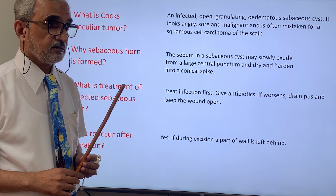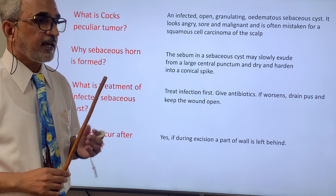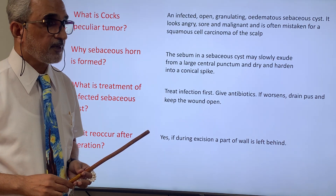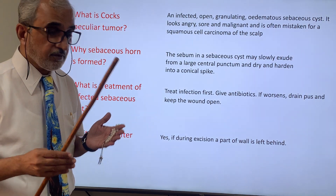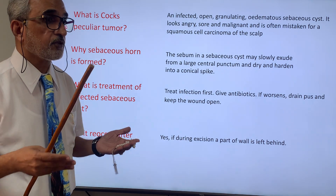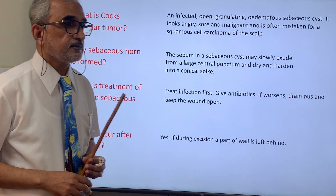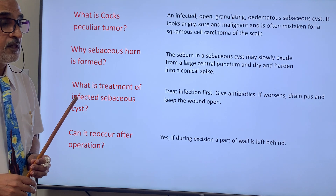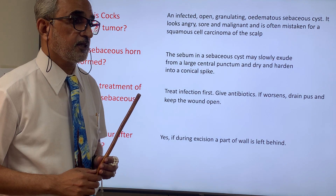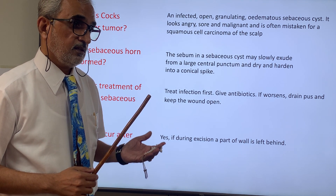What is the treatment of an infected sebaceous cyst? When the cyst gets infected, the infection takes precedence, so antibiotics should be given first. If it does not subside and worsens, it means there is pus and dead tissue, so the pus must be drained and the dead tissue removed. Such a wound should never be closed, because if an infected wound is closed the infection recurs — it should be left open to heal by secondary intention. Once the infection subsides, one can do delayed primary closure. Can it recur after operation? Yes, it can recur if the surgeon is not cautious and leaves behind part of the sebaceous cyst wall.